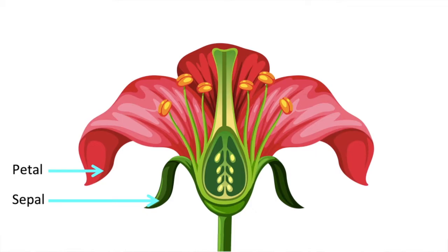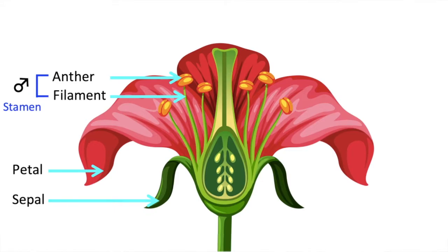Flowers have male and female parts which are required for the process of reproduction. The anther and filament are the male parts of a flower, and we call this the stamen. Each consists of an anther that is held up on a filament. The anthers produce pollen grains, which are vital for the process of pollination and reproduction of the plant.